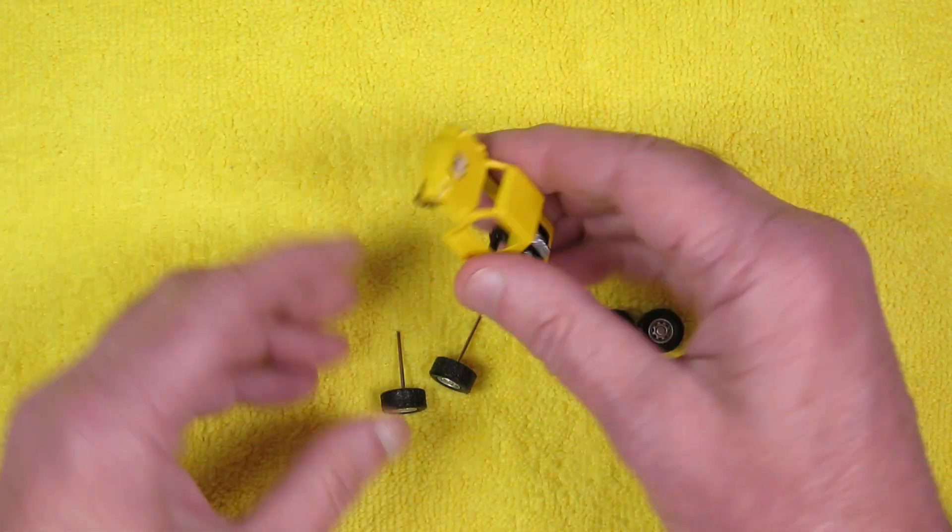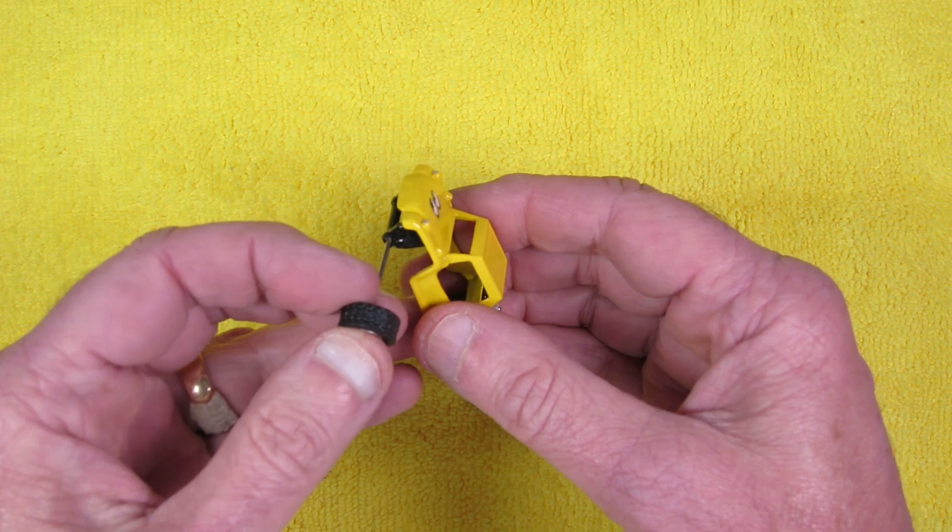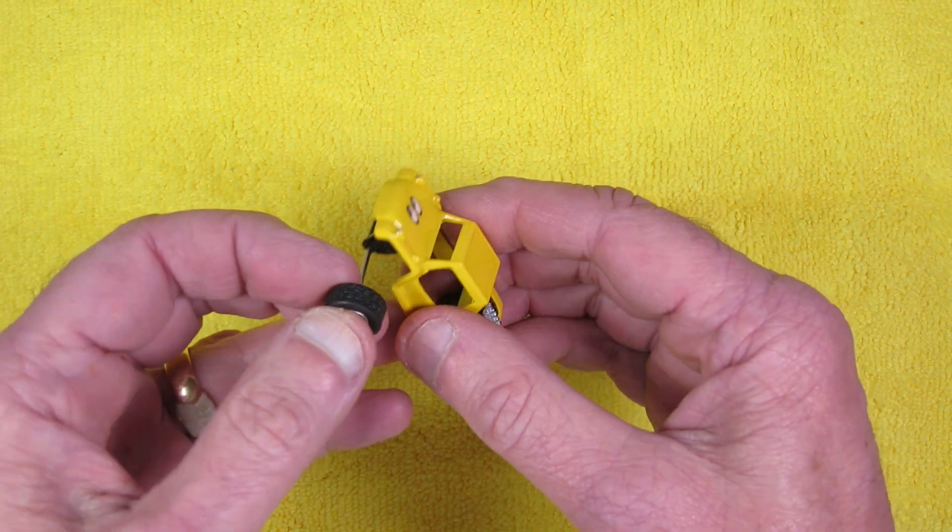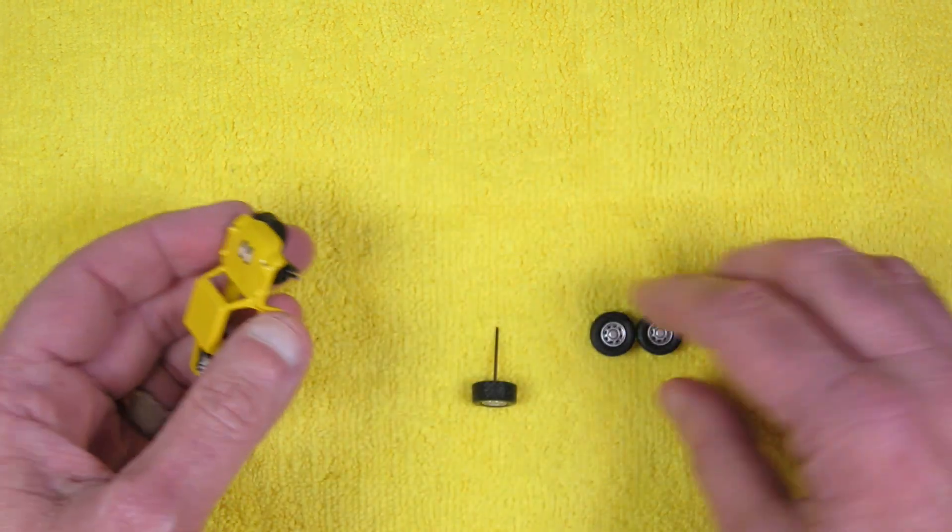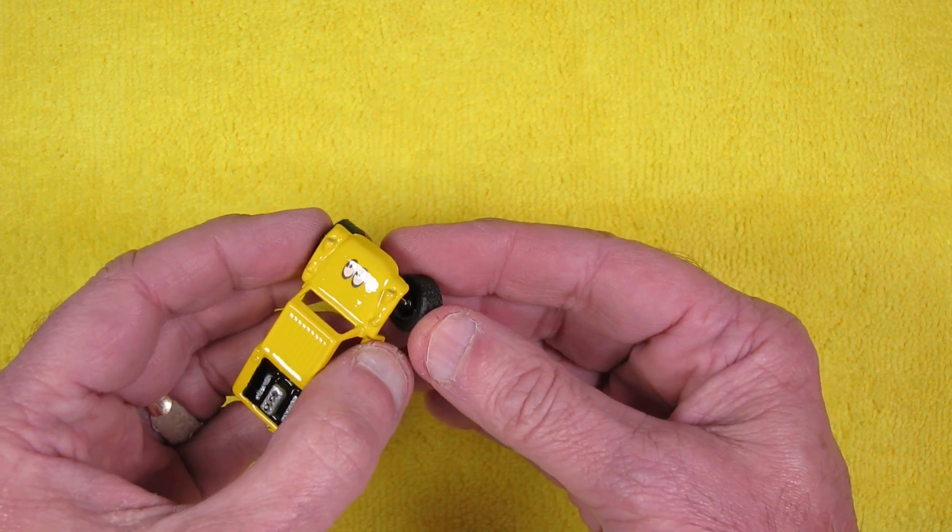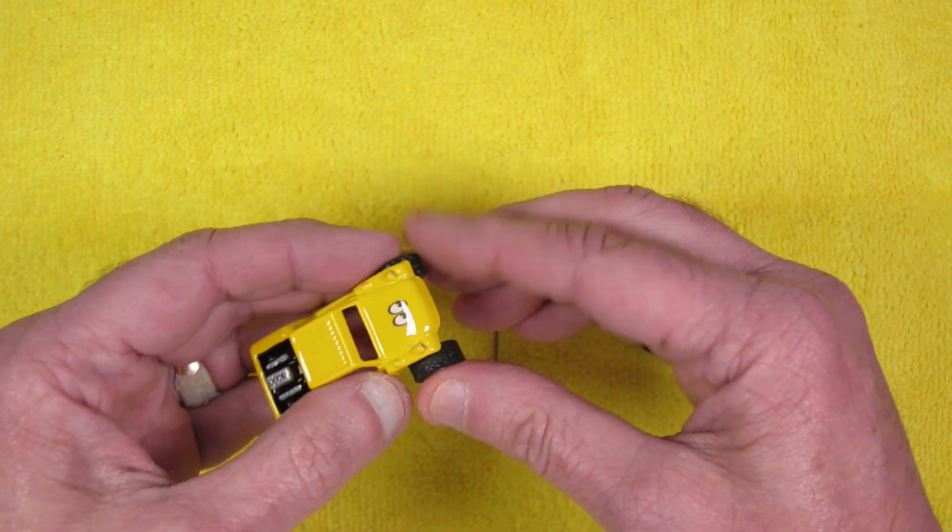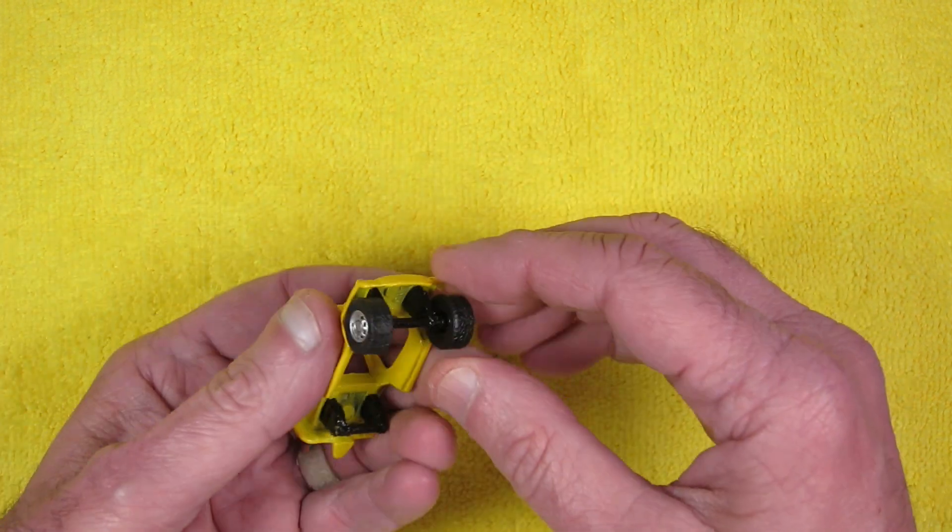So I wasn't going to be able to get them off without destroying them. So I just left them on when I painted the wheels. And then it's just a matter of putting it back together. Yeah, there's not much to put together.